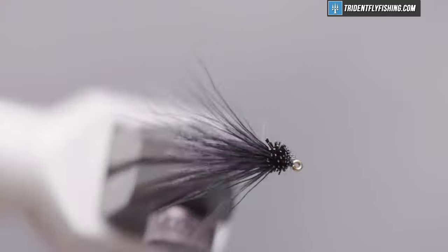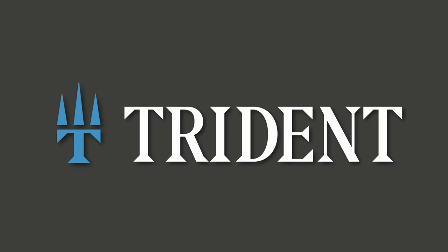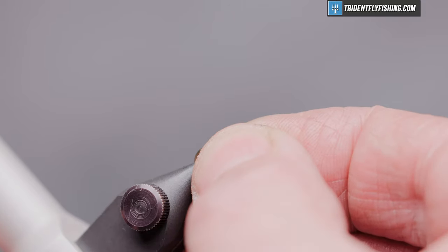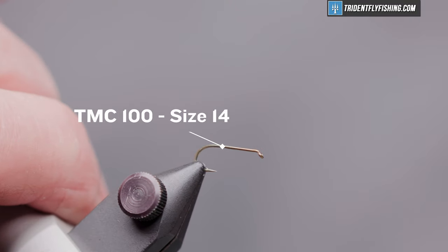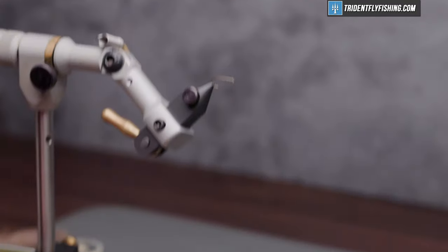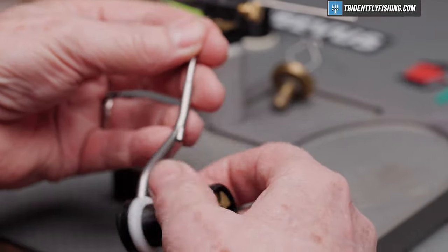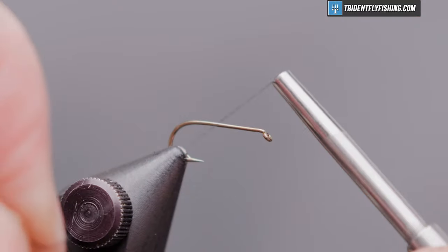Here's the fly in the vise. So the hook we're going to use today is TMC 100 in size 14. That's their standard dry fly hook and our thread is Vivas gel spun thread GSP in 50D in the color black.